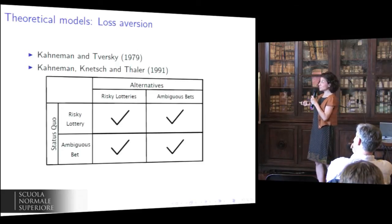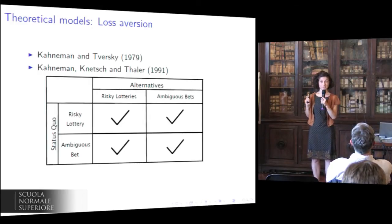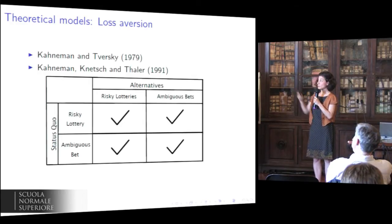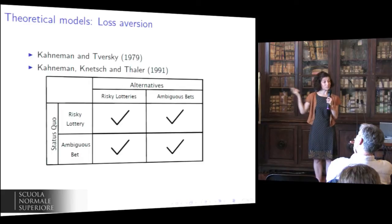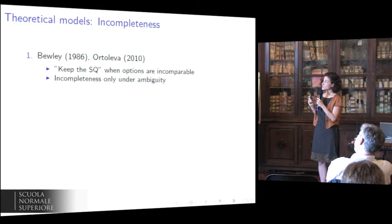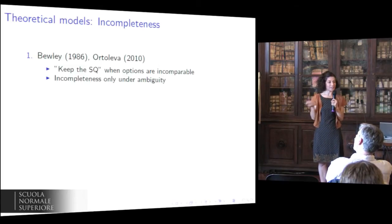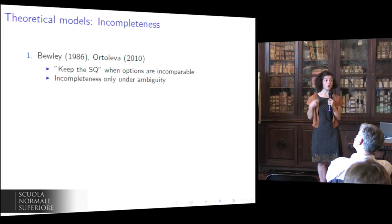According to loss aversion theory, we should expect the emergence of the bias everywhere in this matrix — perhaps with different strength and sizes, but really everywhere. Instead, there is a second group of theories that relates the status quo bias not to loss aversion or regret, but rather to the idea of incomplete preferences.